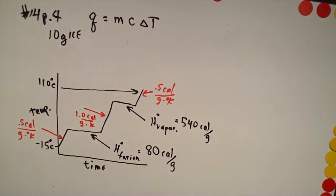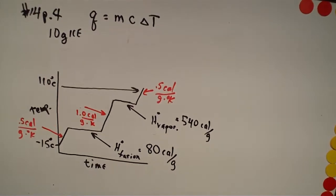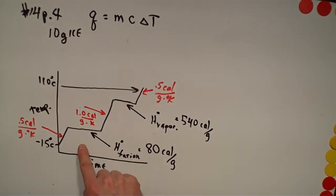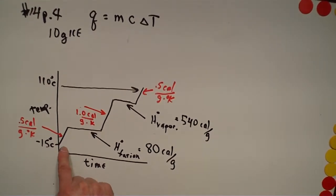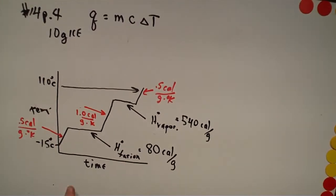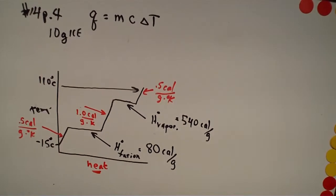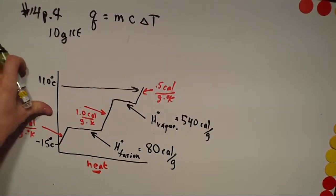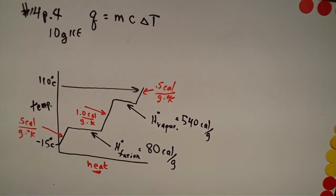This is problem number 14 on page 4 — a little bit of a complicated problem. I wrote out the picture here for you. This is about heat capacity of water. Starting out, here is ice at negative 15 degrees C. You add heat to it, and as you add heat to it, the temperature is going up.